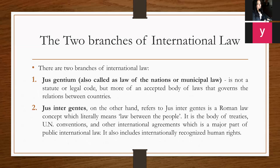What are the branches of international law? Broadly, there are two branches: jus gentium and jus inter gentes. Jus gentium is also called the law of nations, or municipal law, or local laws. It is not a statute or a legal code, but more of an accepted body of law that governs the relationship between countries.